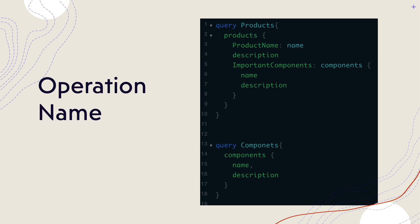Then comes the operation name. Operation names are very important because you might be using different queries within your query operation and you need to differentiate between them. For example, you might have queries for products and components, and these two are differentiated using their operation name. So the query has a name this time — like query products and query components — instead of just an anonymous query with open braces.